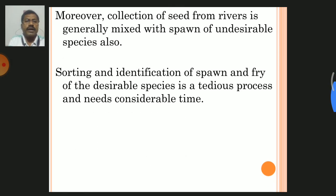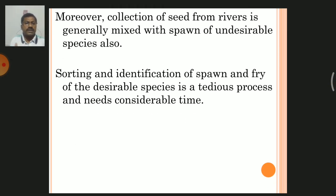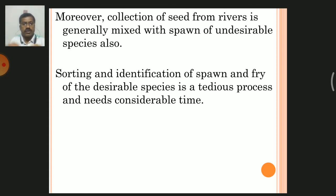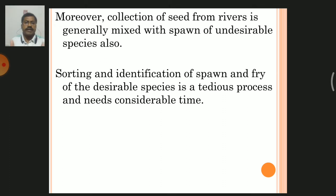Moreover, the collection of seed from rivers is generally mixed spawn containing undesirable species also. The Indian major carp species have a breeding season, meaning the period when the gonads are mature and gametes are released, which is generally from June to August.